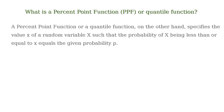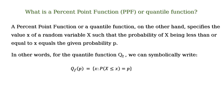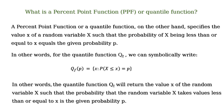A percent point function or quantile function specifies the value small x of a random variable capital X such that the probability of X being less than or equal to small x equals a given probability p. Symbolically, the quantile function Q is written as Q(p) = x such that P(X ≤ x) = p. In other words, Q returns the value x such that the probability that X takes values less than or equal to x equals p.